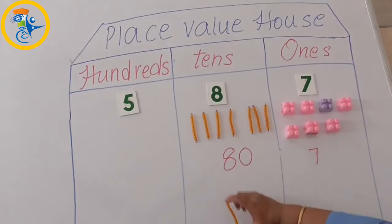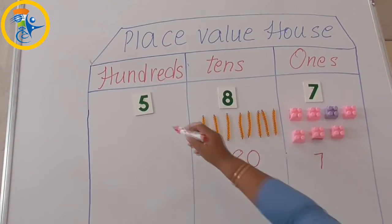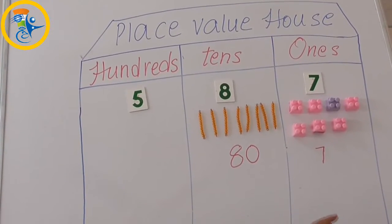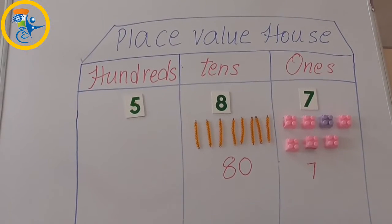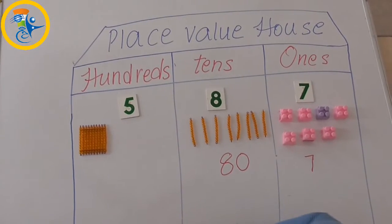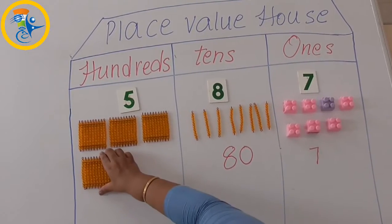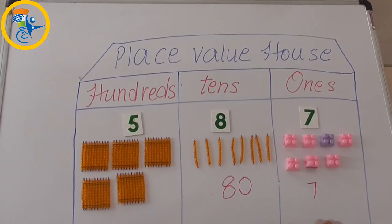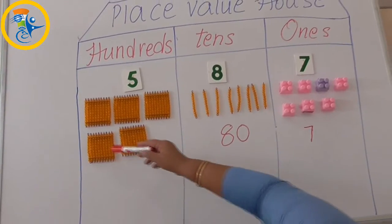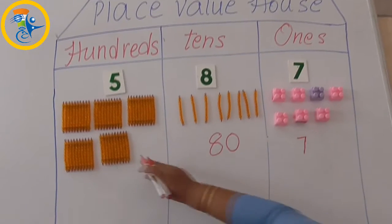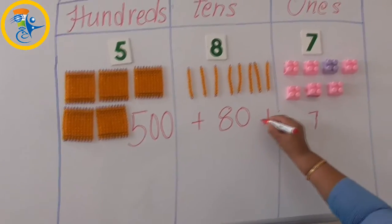You know that 1 ten is equal to 10 ones. Now let us understand the value of 5 at hundreds. I am going to place the 100 grids. 5 at hundreds: this is 100, 200, 300, 400, and 500. So the value of 5 at hundreds is 500.